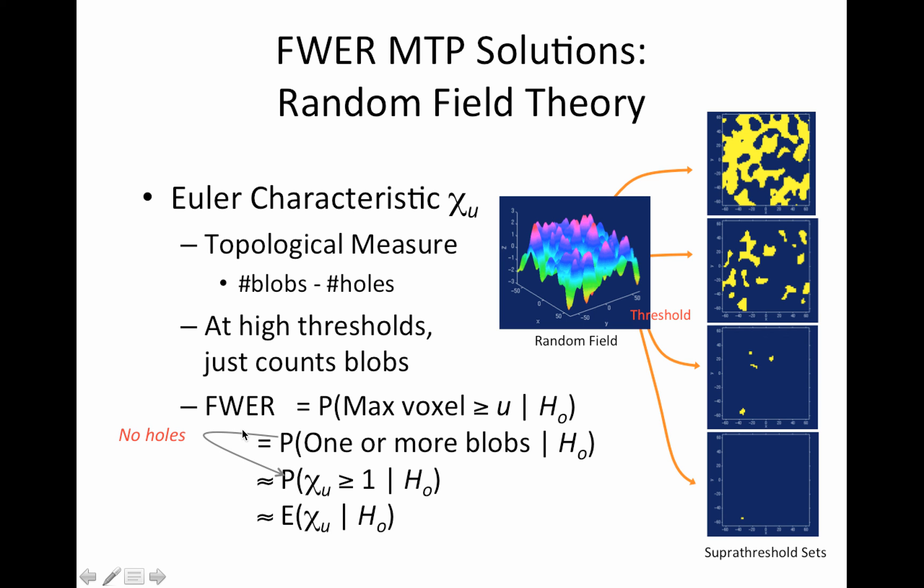So this first approximation is assuming our threshold is high enough that we don't have any holes. And if that's the case, then this probability, the family-wise error rate is approximately equal to the probability that the Euler characteristic is greater than one under the null.